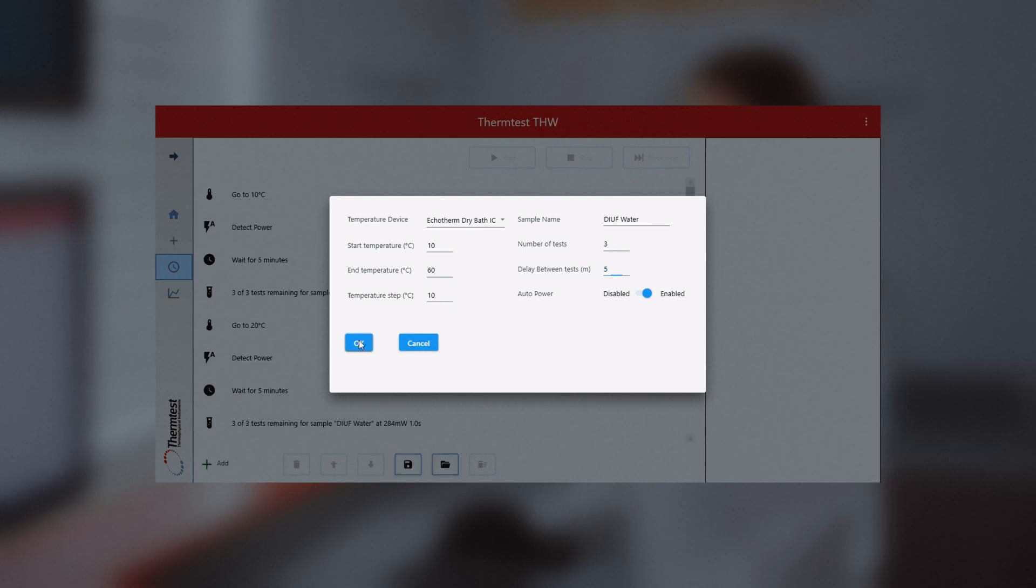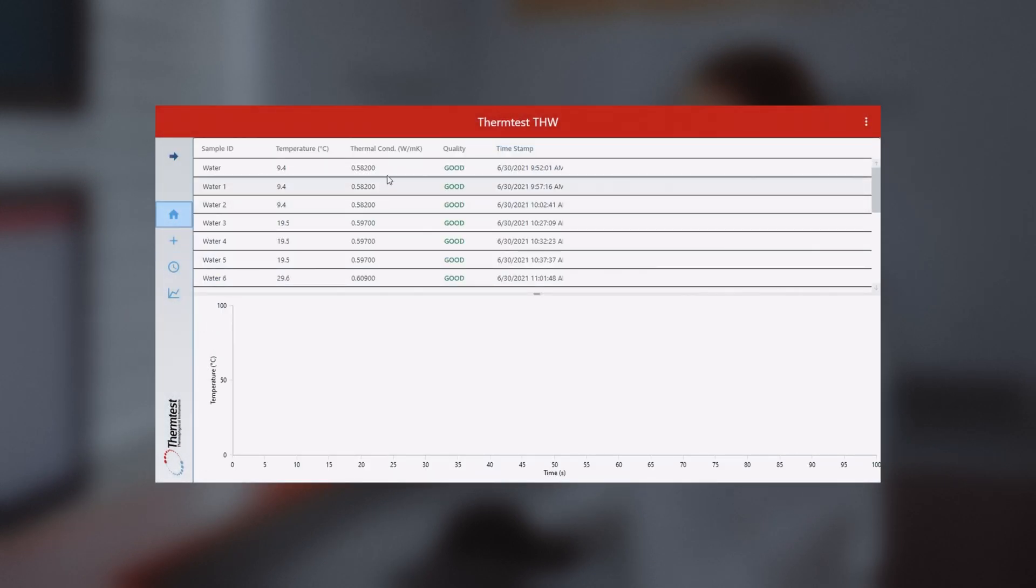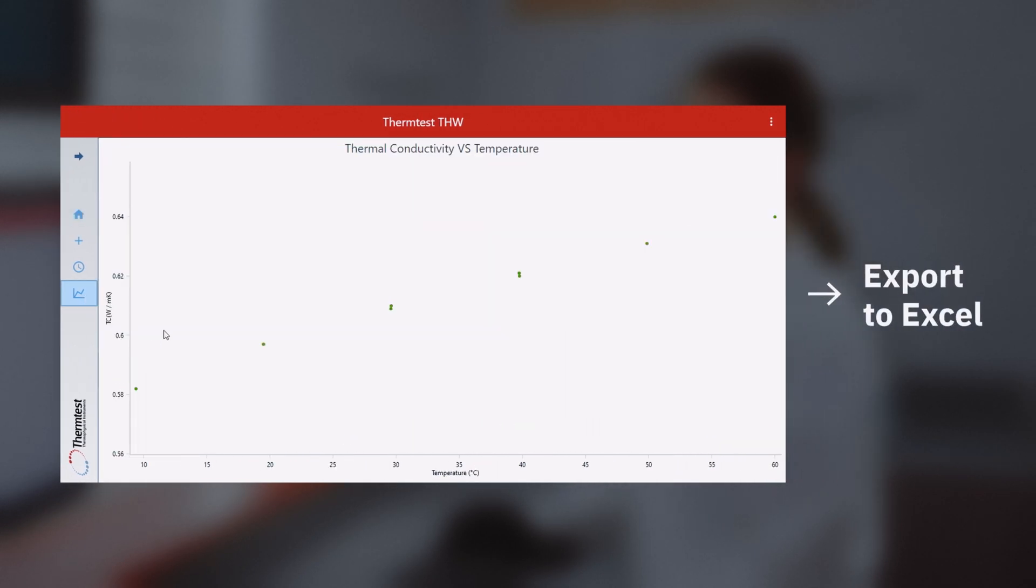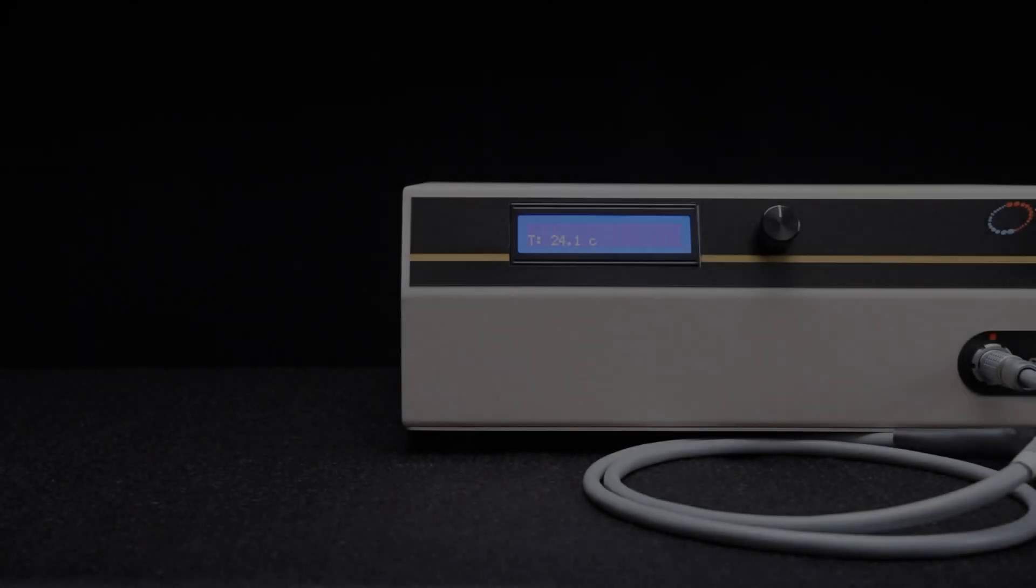Single temperature point measurements as well as scheduled temperature intervals may be performed using the easy-to-use THW software. Using the Windows-based software, users can save, print and export test results to Excel for further processing once testing is complete.